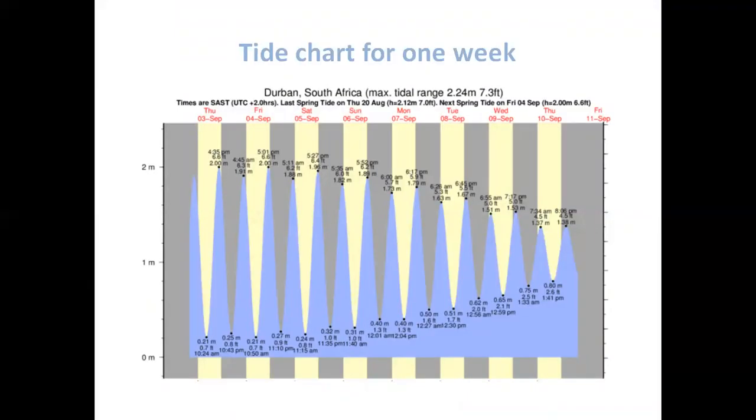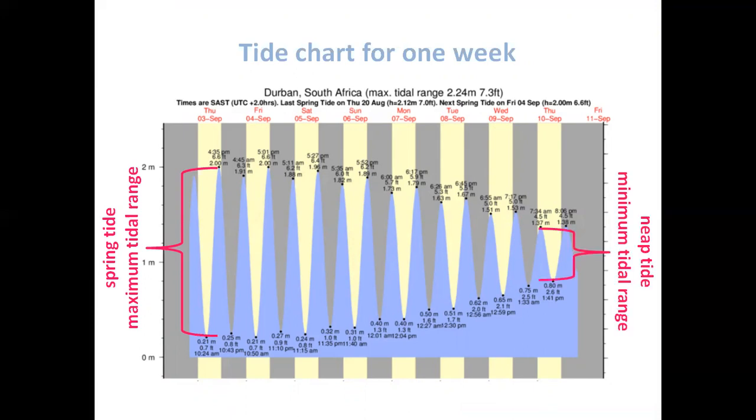Let's look at the tide chart for one week. We see at the beginning of the week, there's a maximum tidal range, and that's called a spring tide. And at the end of the week, we see a minimum tidal range. That's called a neap tide.